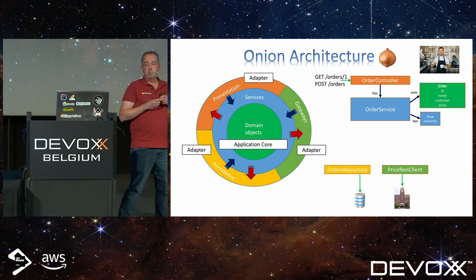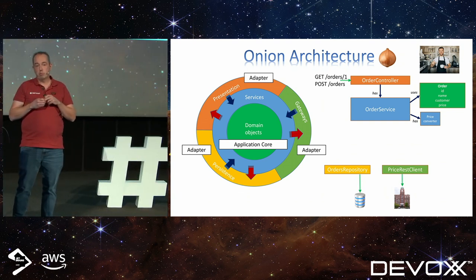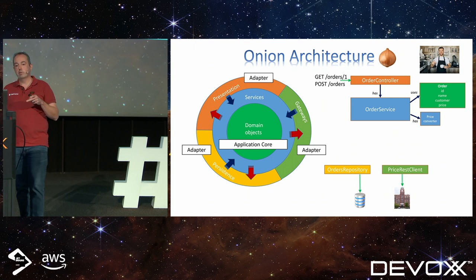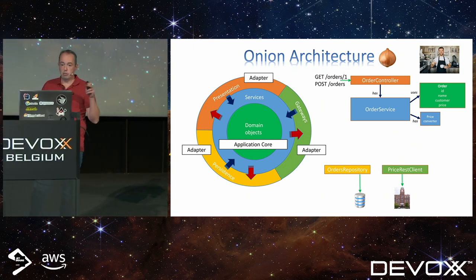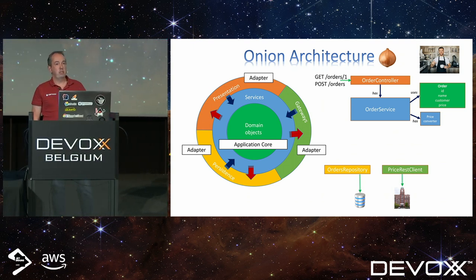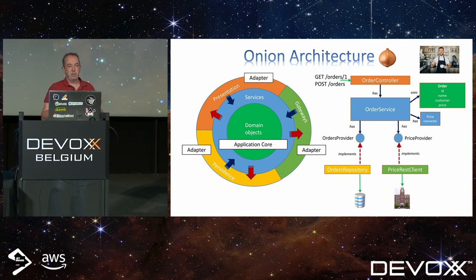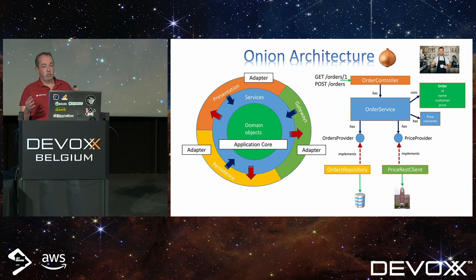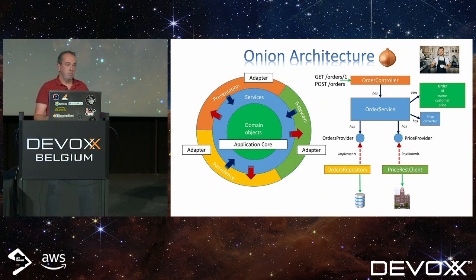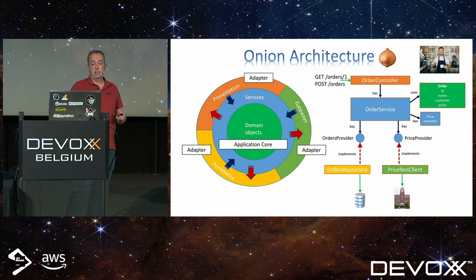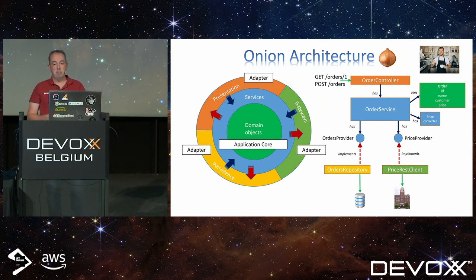How do you access these external dependencies? You're not allowed to make a direct dependency from order service to repositories or a price REST client. The solution: you define some interfaces that are part of your core, so the application core still doesn't know anything about these external classes. Then at runtime, you use dependency injection to get these classes running in the system. That's the basic idea.